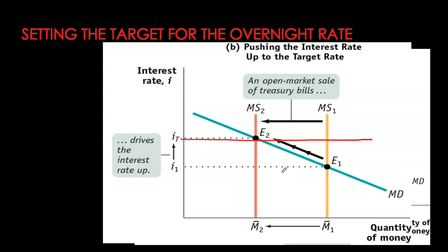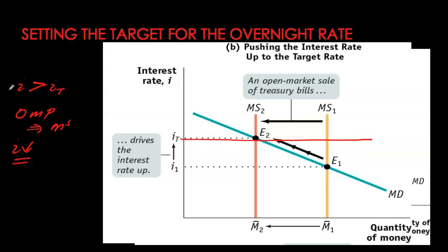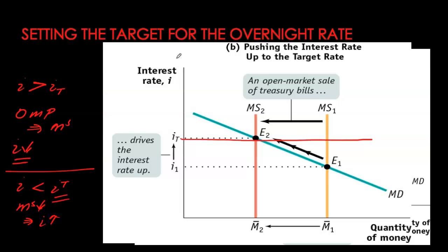As a rule of thumb: whenever the current interest rate is higher than the target, the Bank of Canada conducts an open market purchase to increase money supply and put downward pressure on rates. Whenever the interest rate is lower than the target, the Bank conducts an open market sale of securities to reduce money supply, creating a shortage in the money market and pushing the interest rate up to its target level.